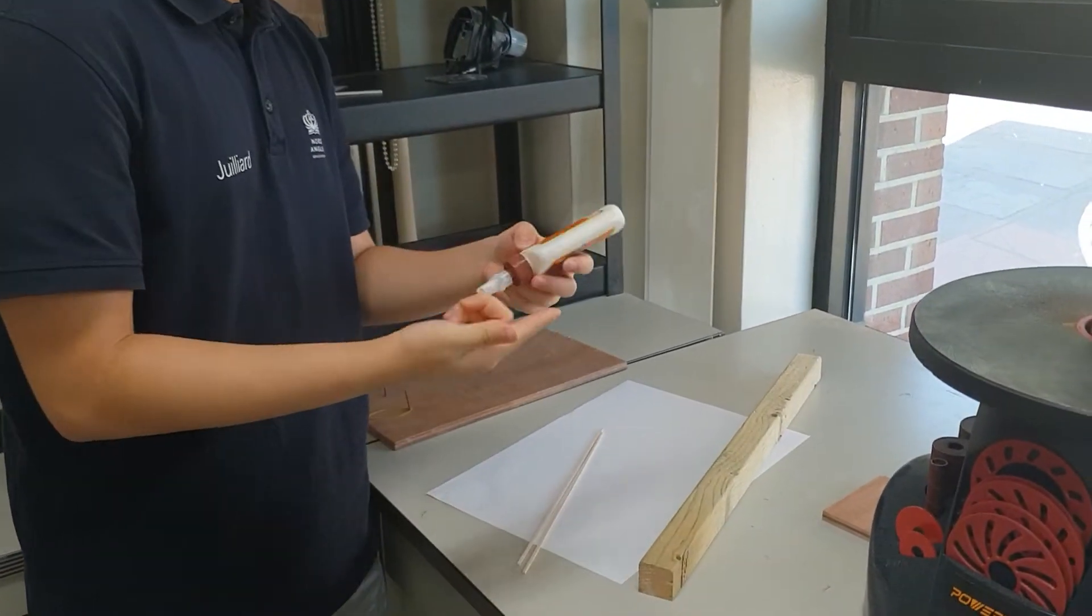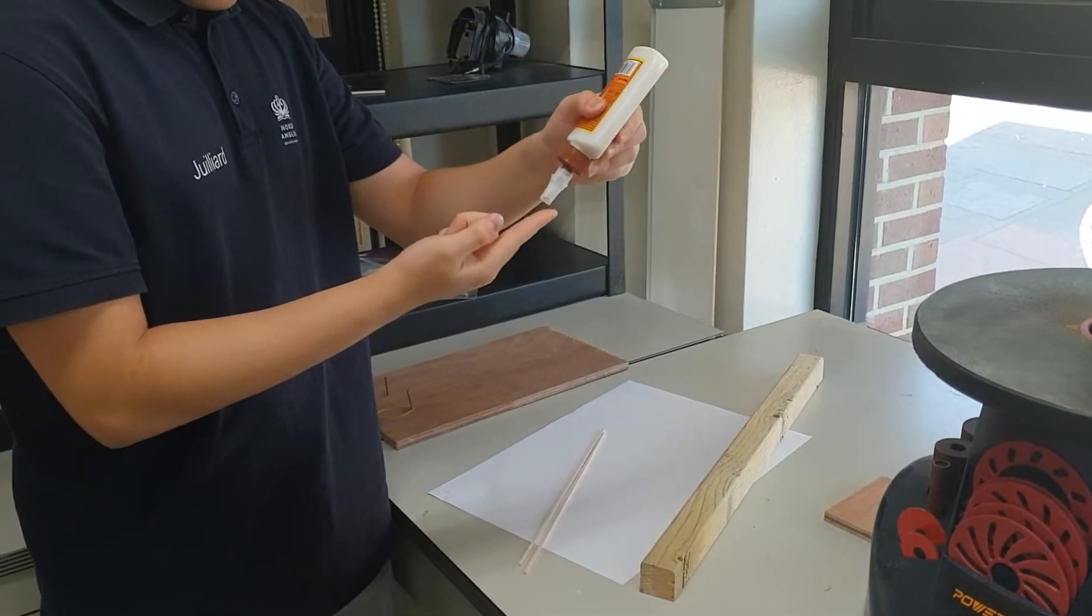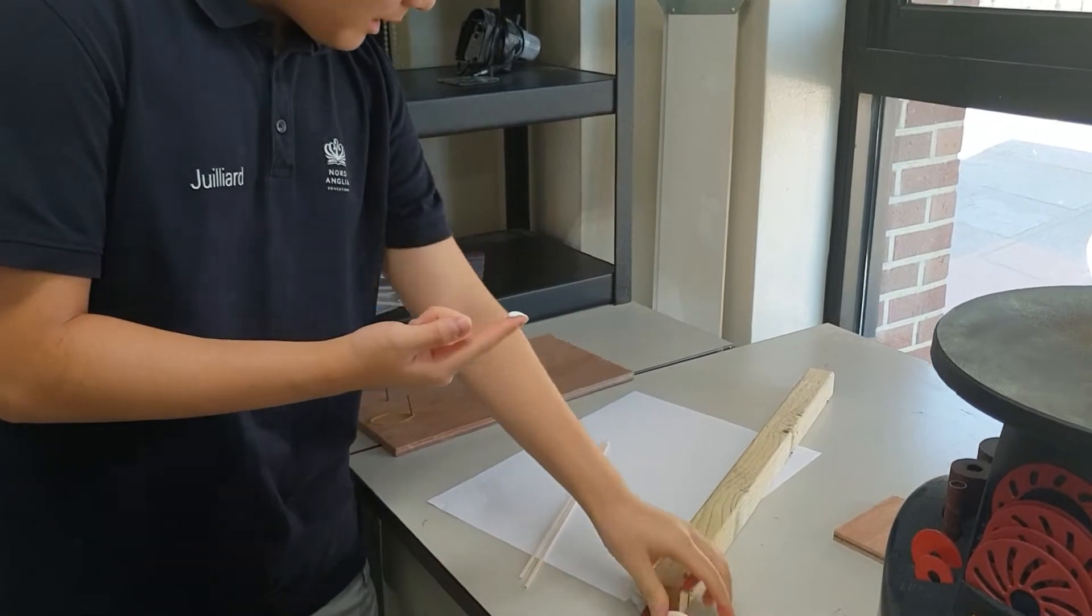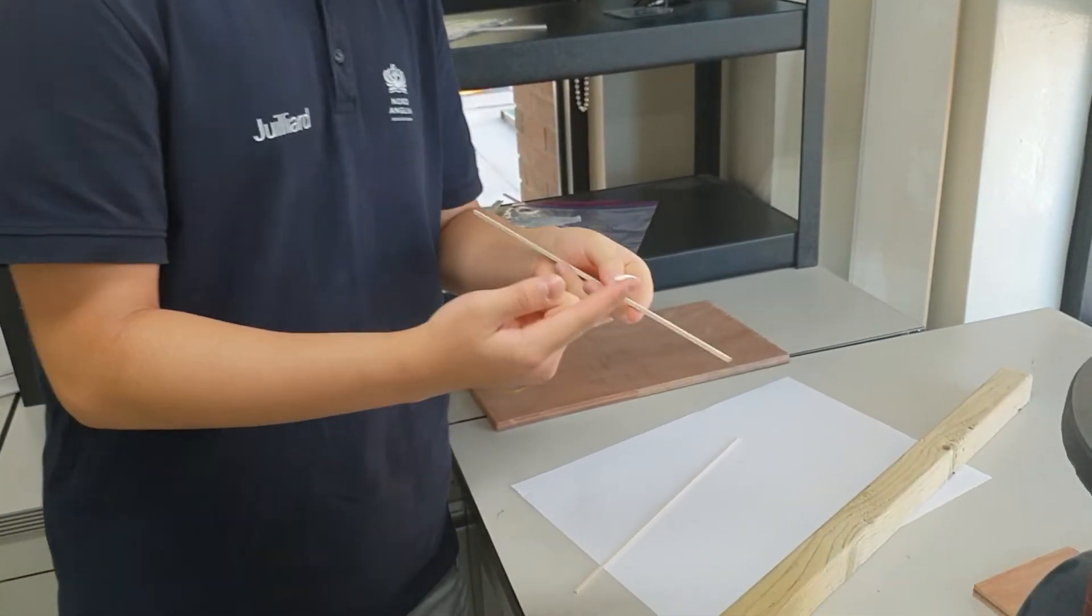So first, you put some on your finger. Not a lot, but enough so that it will make the wood wet. I'll show you later.